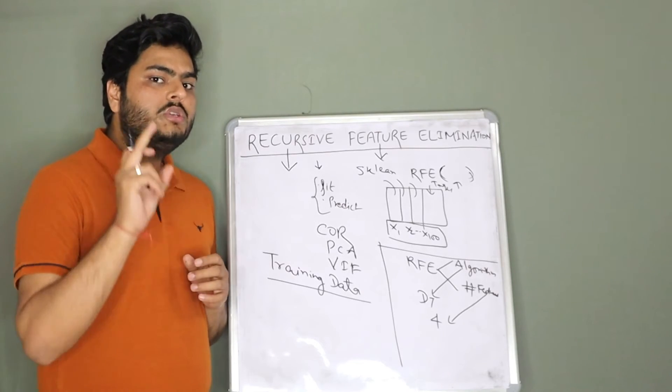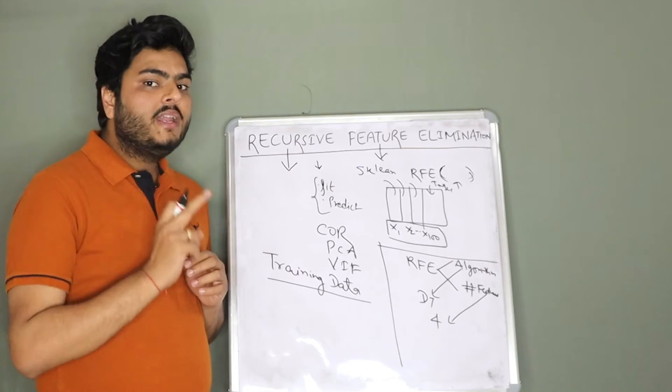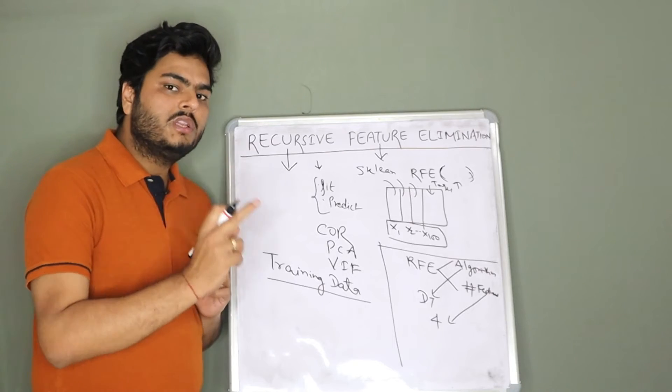The meaning of that is run a decision tree classifier on this training data and tell me which four features are most important for me.